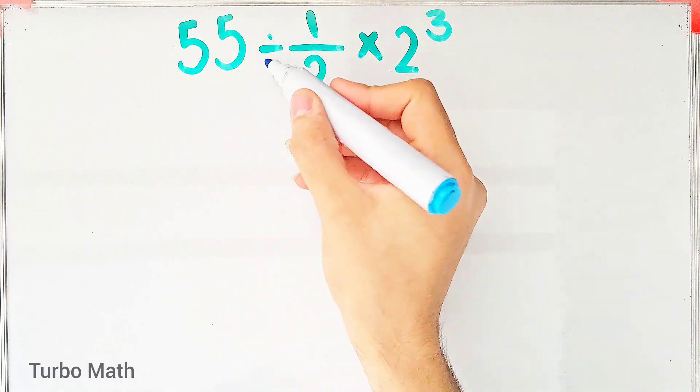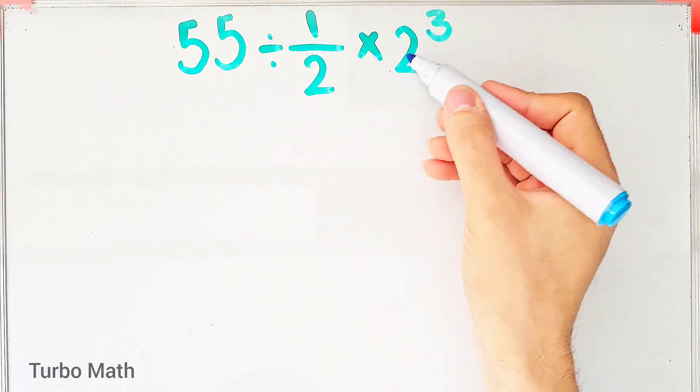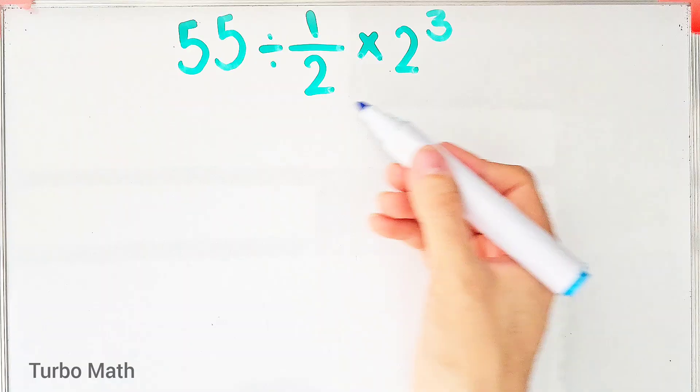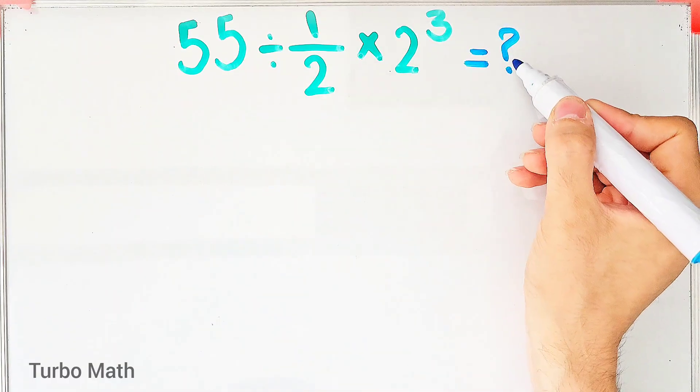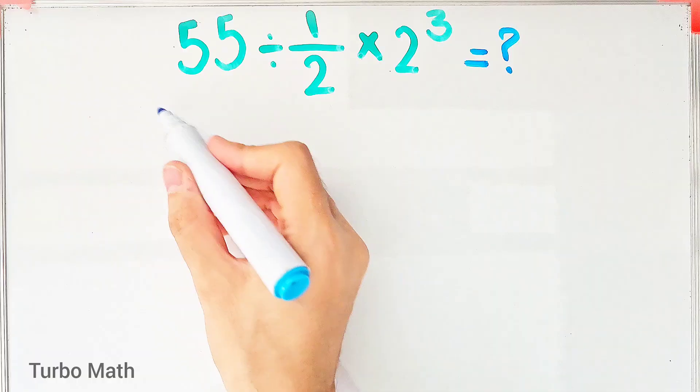55 divided by 1 over 2, then times 2 to the power of 3. What is the answer of this question? Hi friends and welcome to TurboMask channel. In this question we have division, multiplication, and exponent.